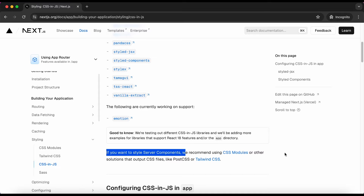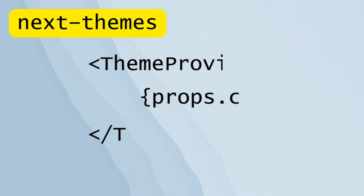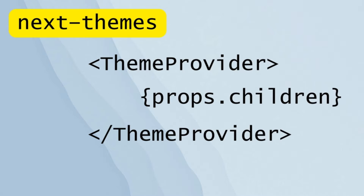One more thing I want to highlight is that styled components includes a theme provider which we use to wrap our app. This allows us to access the theme object in all components, but it does not persist the theme, so we have to use local storage. Accessing the user's selected theme from local storage will take a little time and it shows a flash — the initial load shows the default theme before switching to the selected theme after a few seconds. Therefore I'll be using the next-themes package; in my opinion it makes things much easier.